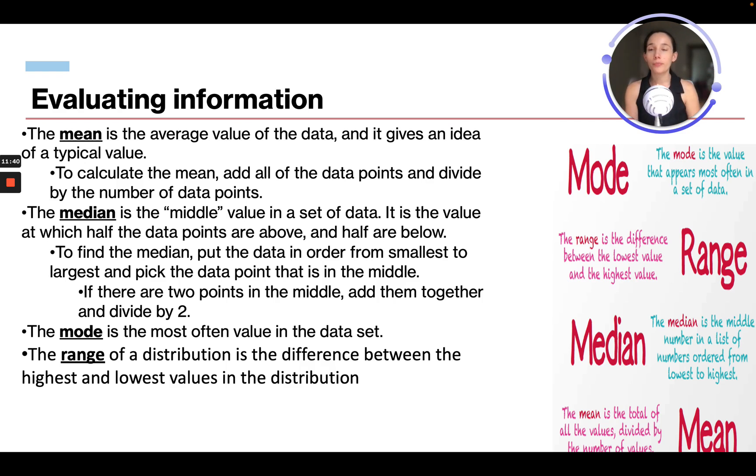Okay, so evaluating information. The mean is the average value of the data, and it gives an idea of a typical value. To calculate the mean, you're going to add up all the data points and divide by the number of points. So the mean is the total number of all the values divided by the number of values. Say you have 10 values, you're going to add them all up and divide by 10, and that's going to be your mean.